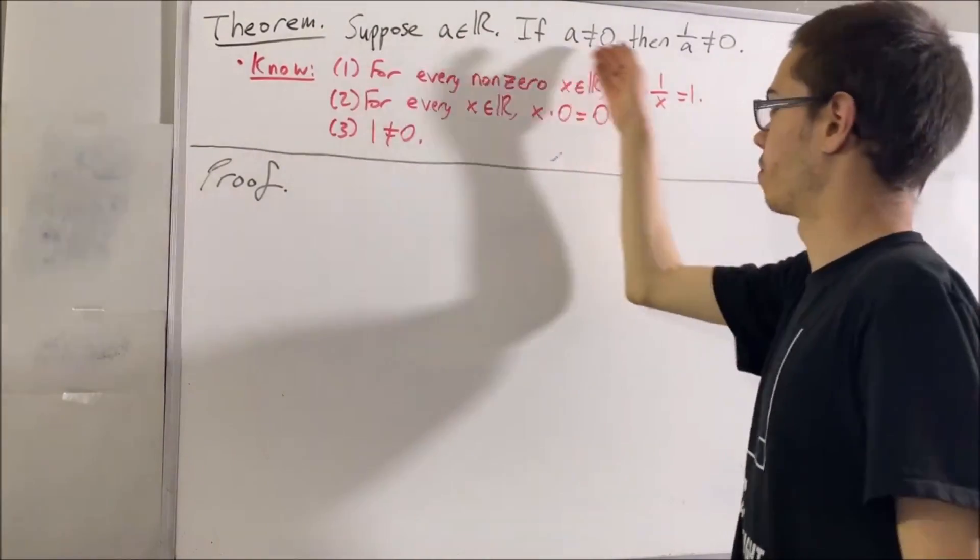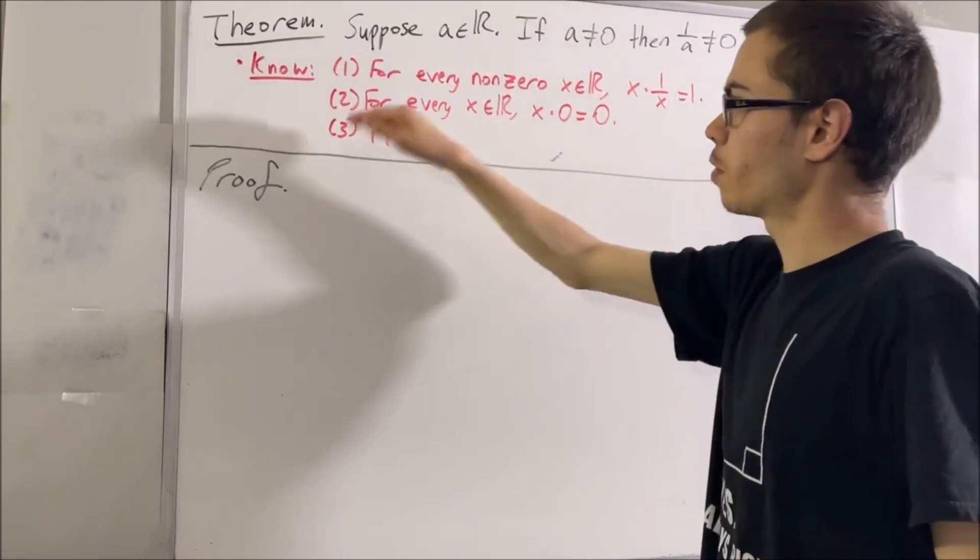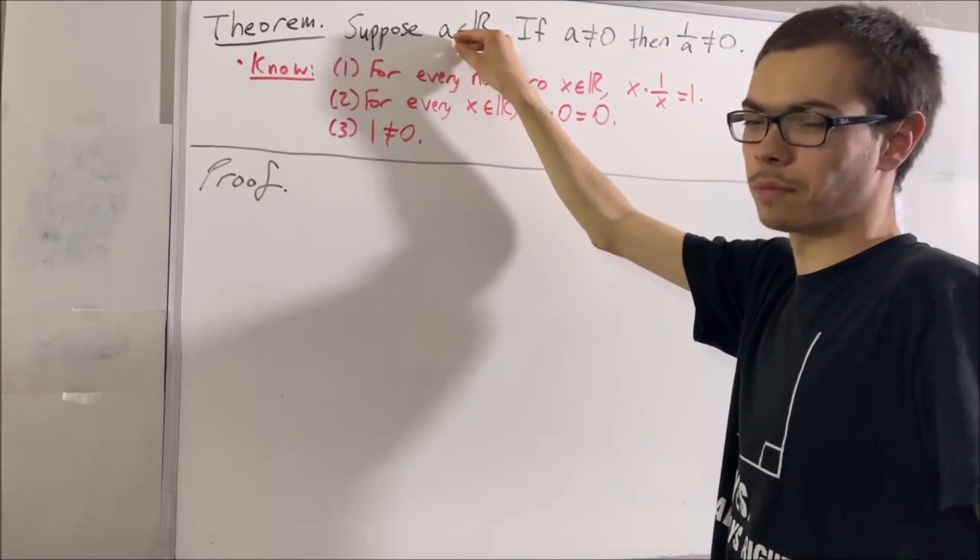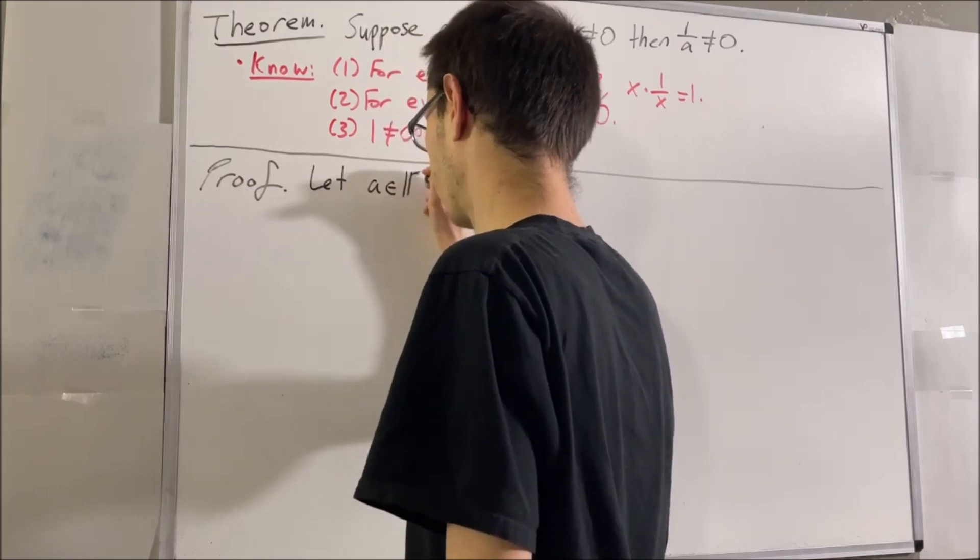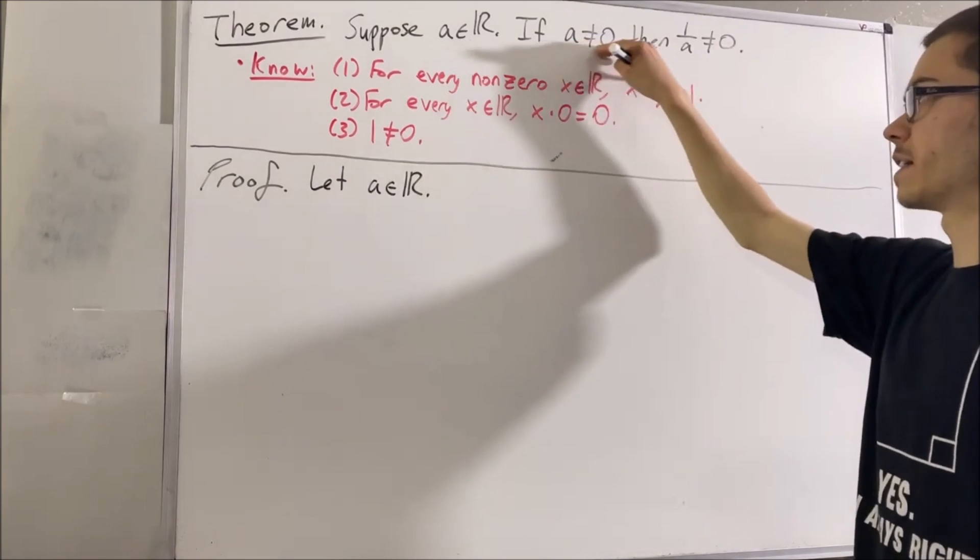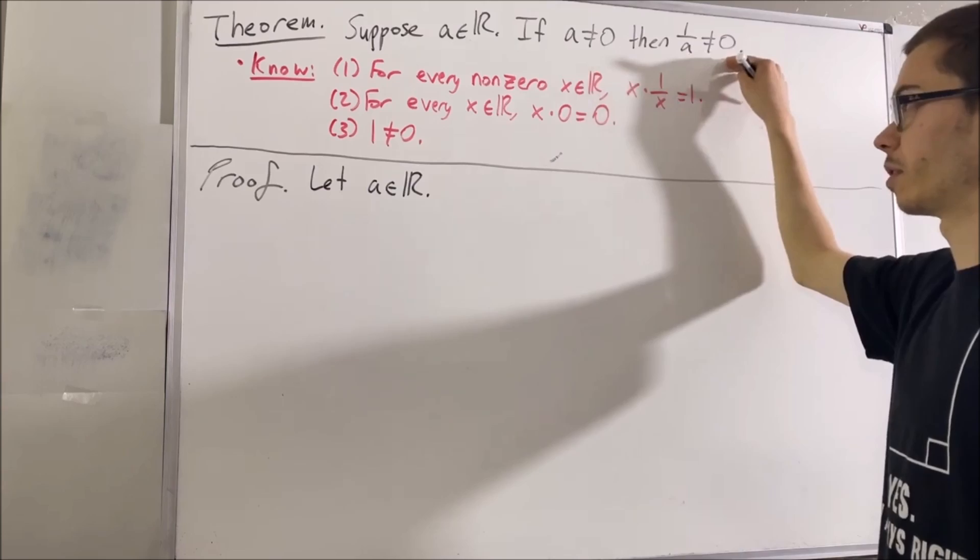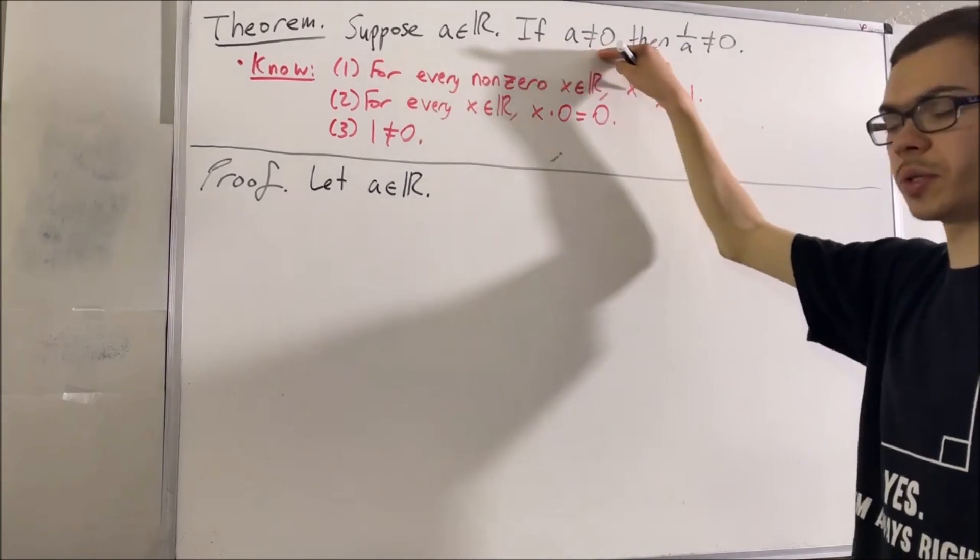Now let's get into proving the theorem. To start out our proof, let's give ourselves some real number A. Our goal is to prove if A is not equal to zero, then the reciprocal of A is not equal to zero. So, let's assume that A is not equal to zero.